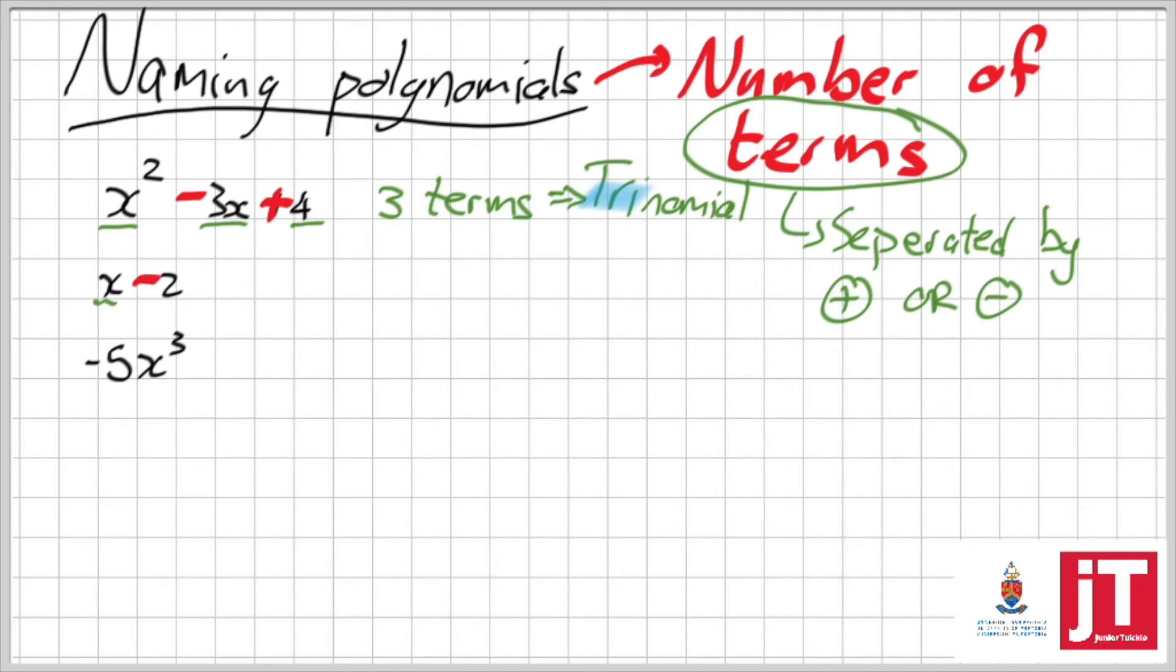In the second one, there's a minus that separates the x and the 2. So therefore, there are two terms. It's called a binomial.